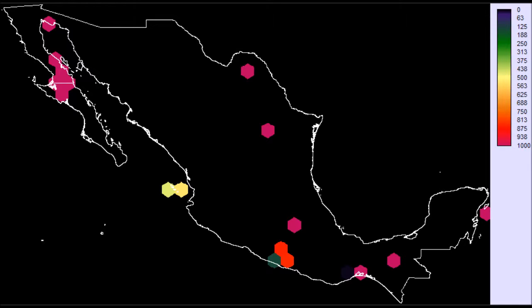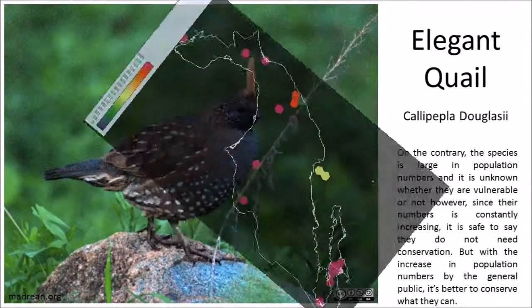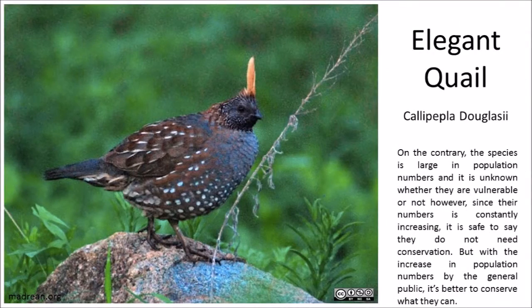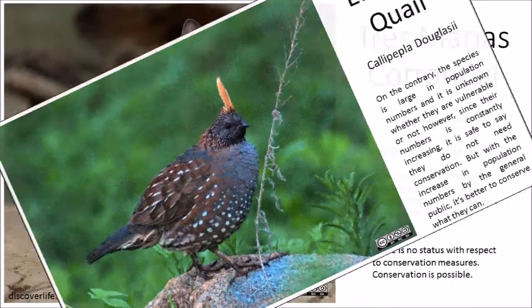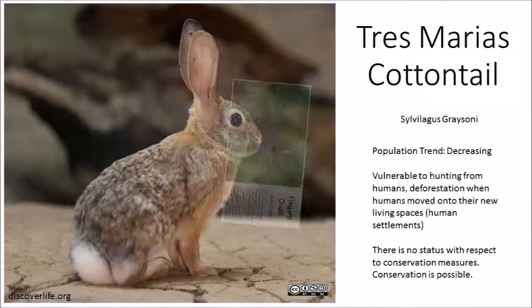Results concluded that Calipepla, the Central Mexican broad, and the Tres Marias Cottontail meet the general requirements, bearing in mind all other features. I found that the hexagon planning unit is better from a planning perspective.